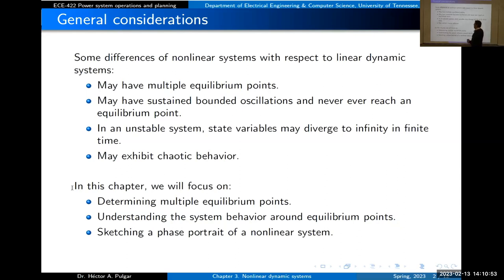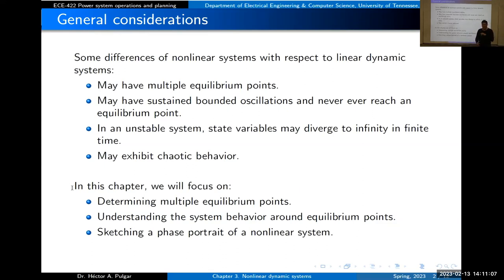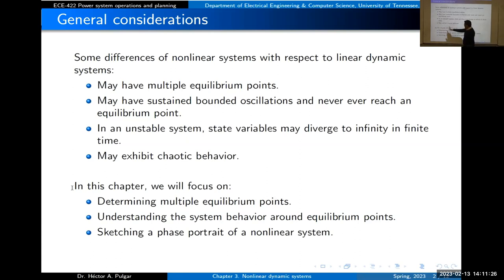Another difference: in an unstable nonlinear system, state variables may diverge to infinity in finite time. The system can blow up at some finite time, say 10 seconds. In a linear system that won't happen — variables blow up at an infinite rate going to infinity only at infinite time.